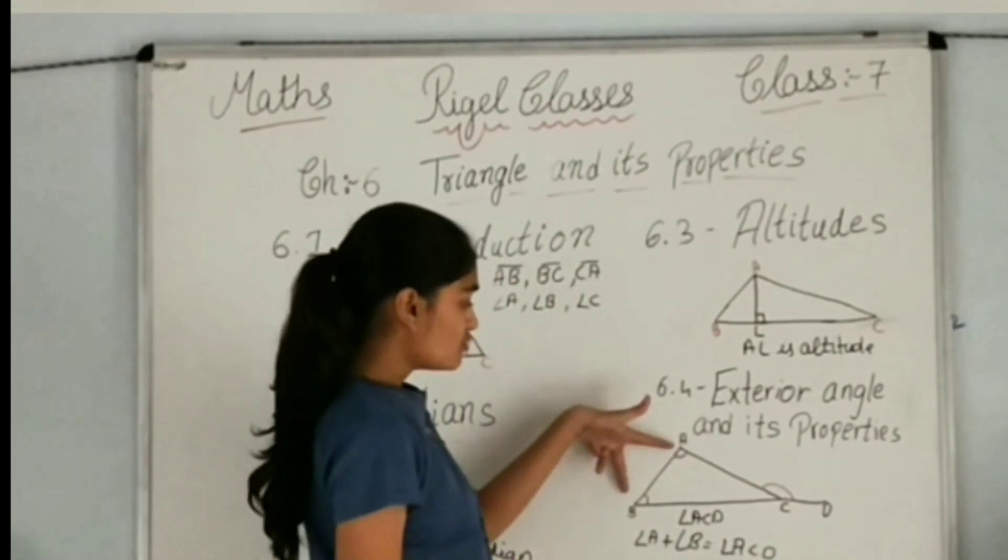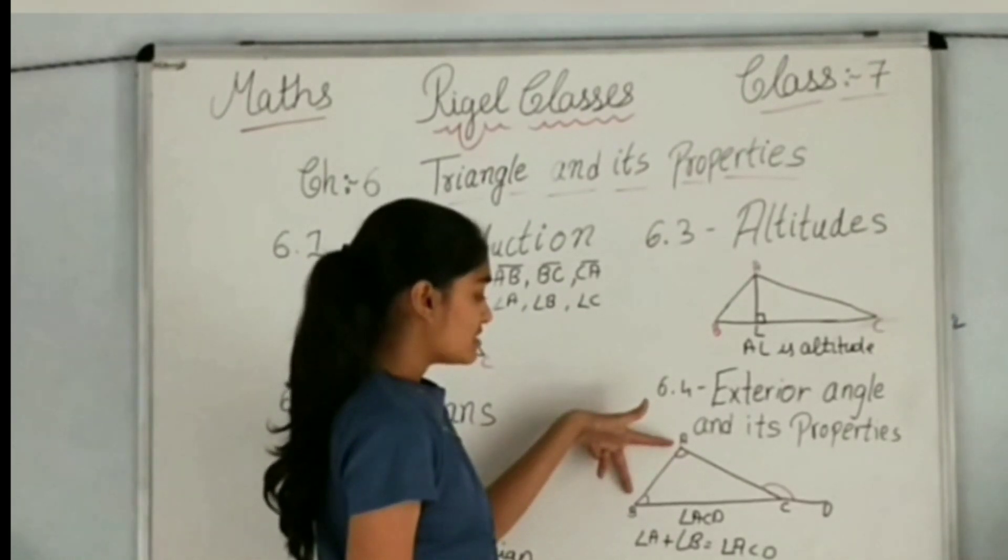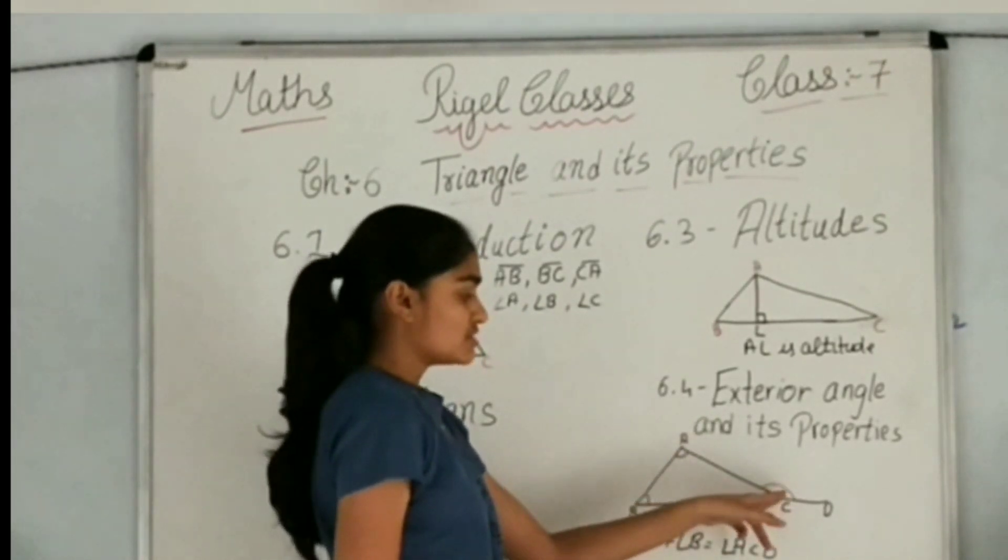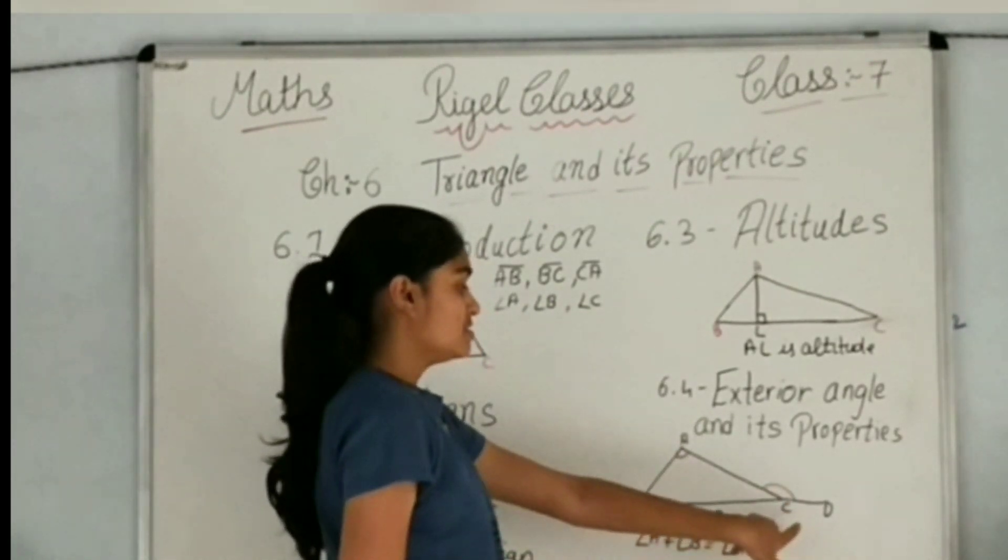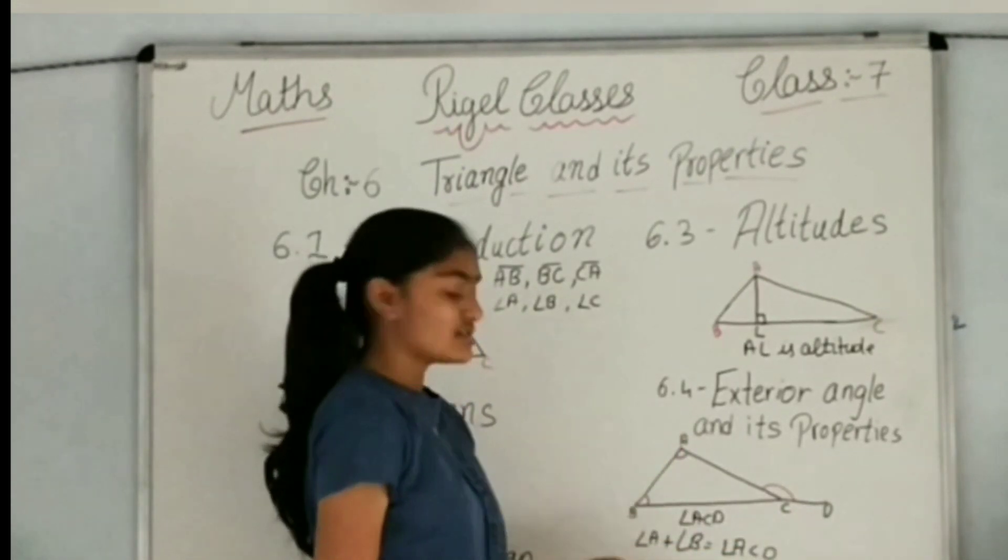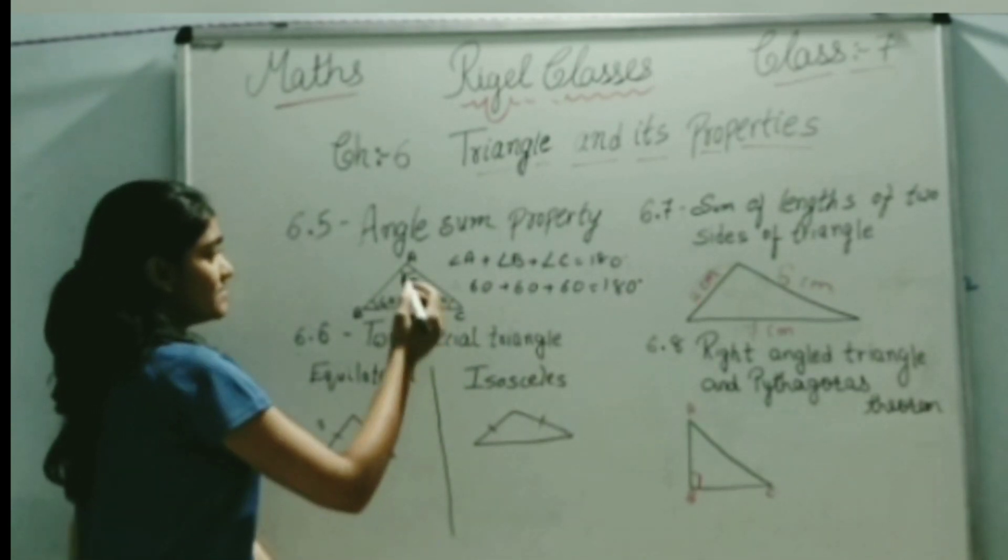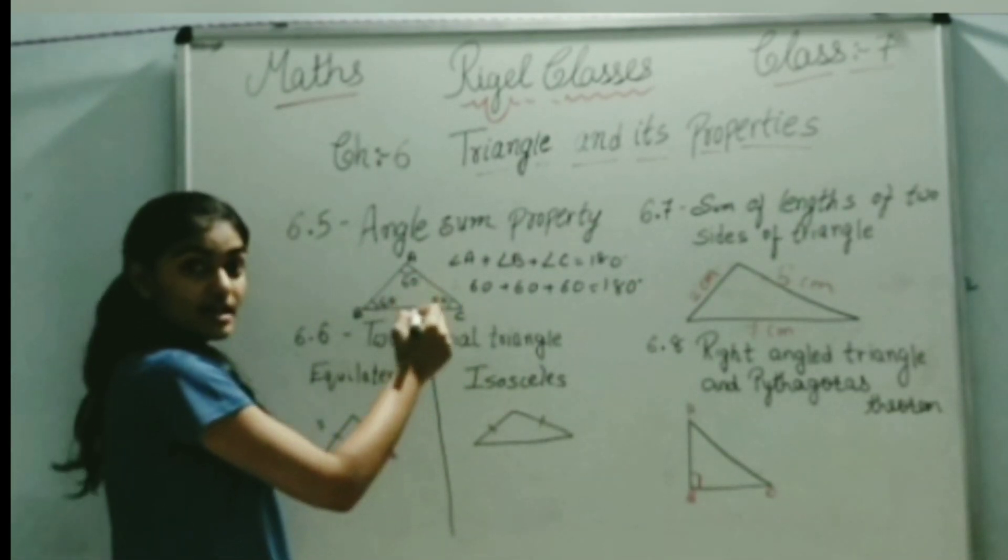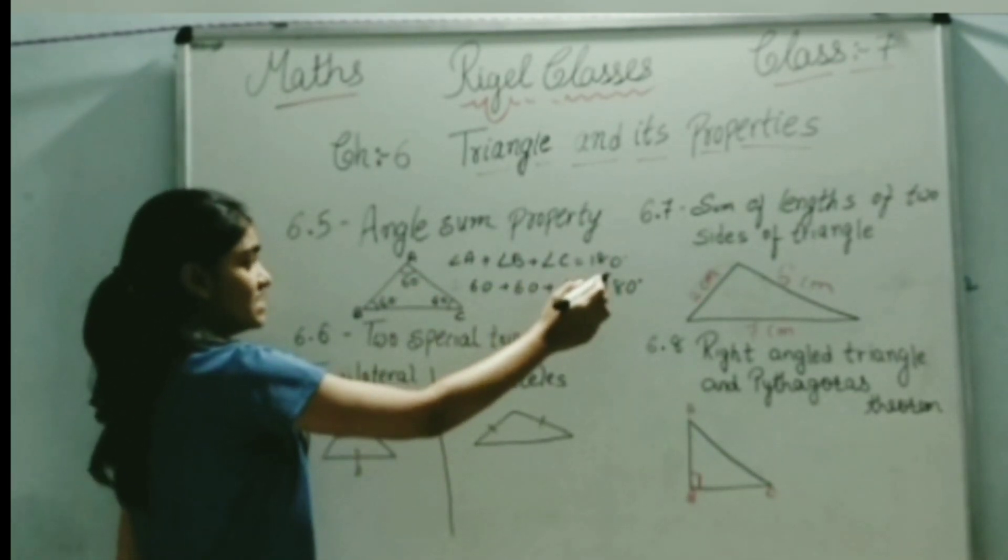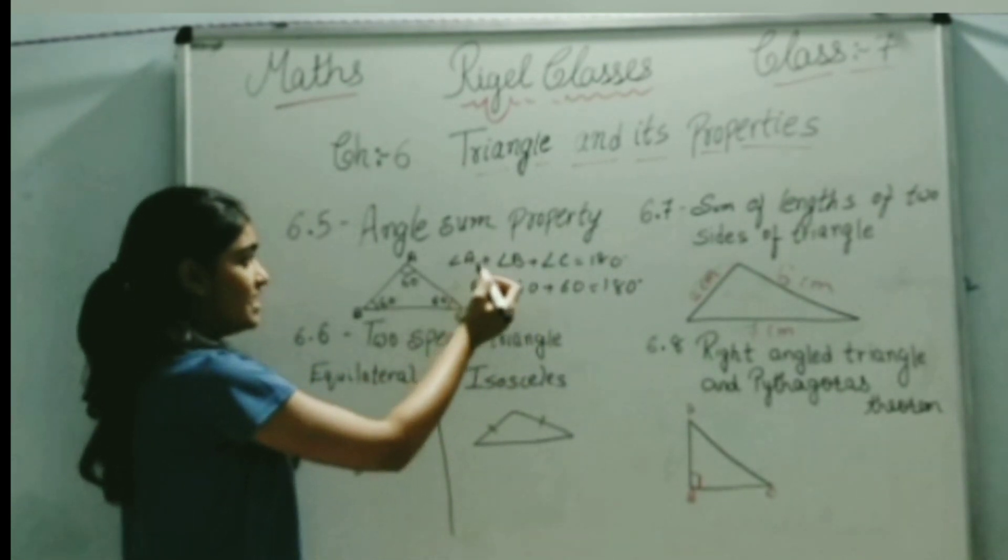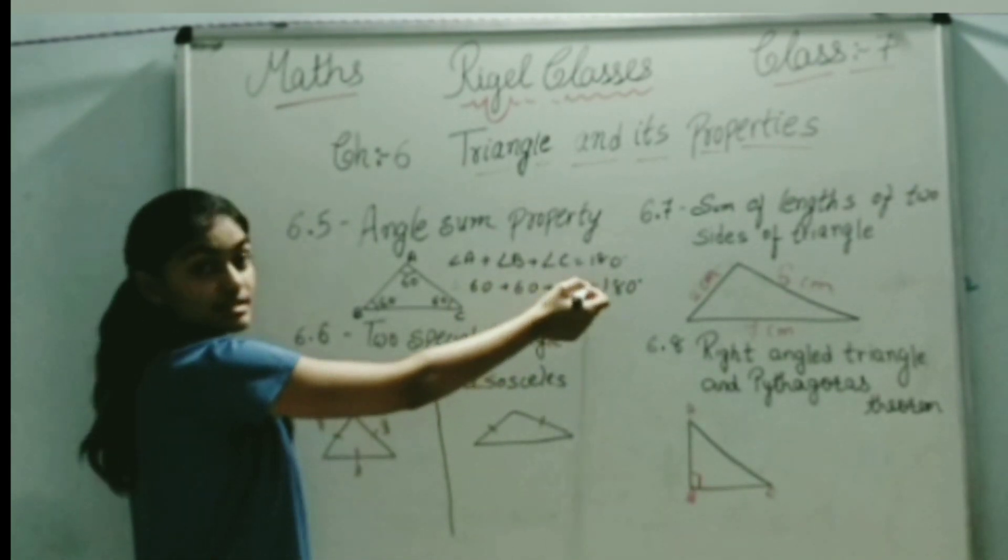The sum of two angles inside the triangle equals the angle outside the triangle. This is the exterior angle property. The angle sum property says that the sum of all angles in a triangle is always 180 degrees. That is, angle A plus angle B plus angle C equals 180 degrees.